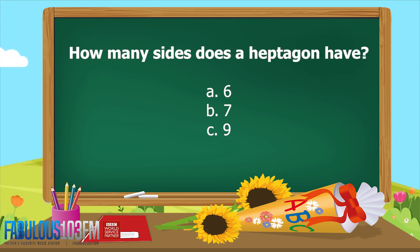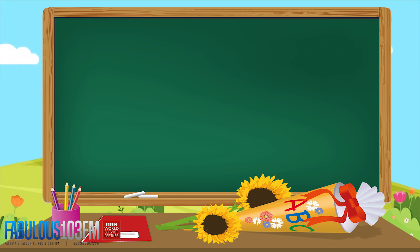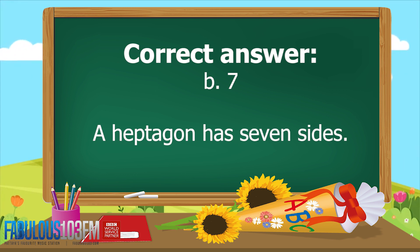Shout your answer at the radio as loud as you can. The correct answer is B, seven. A heptagon has seven sides.